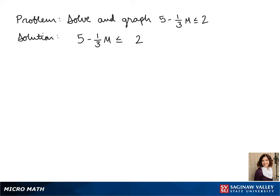Our first step will be to get rid of that fraction, so we multiply both sides by 3. 3 times 5 gives us 15, minus 3 times 1/3m is just m, is less than or equal to 3 times 2, which is 6.